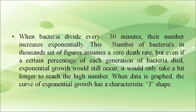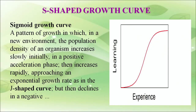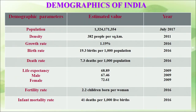When bacteria divide every 30 minutes, their numbers increase exponentially. Even if a certain percentage of each generation of bacteria died, exponential growth would still occur. When data is graphed, the curve of exponential growth is J-shaped. The sigmoid growth curve shows a pattern in which population density increases slowly initially in a positive acceleration phase, then increases rapidly approaching an exponential rate, but then declines. This figure shows demographic figures of India.